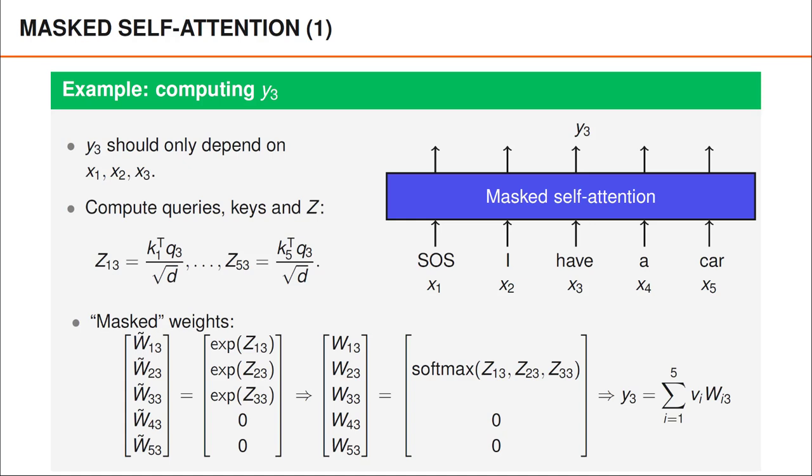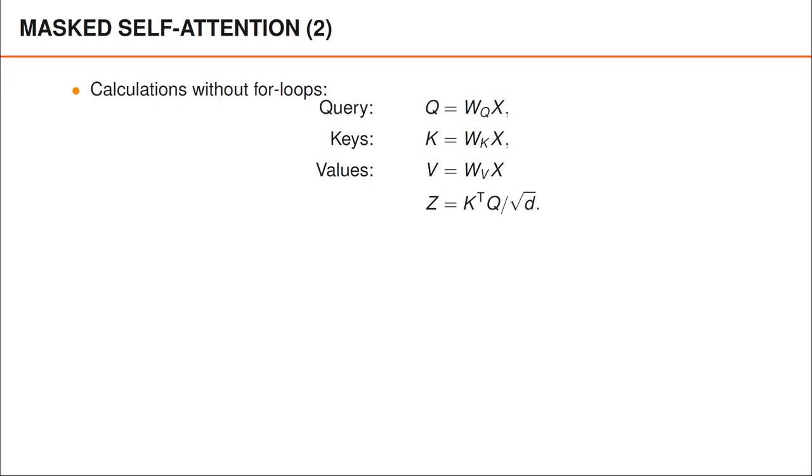Finally, we compute y3 by taking a weighted average over the different value vectors. Since the weights for the fourth and the fifth value vectors are zero, y3 does not depend on x4 and x5, which is what we wanted to achieve.